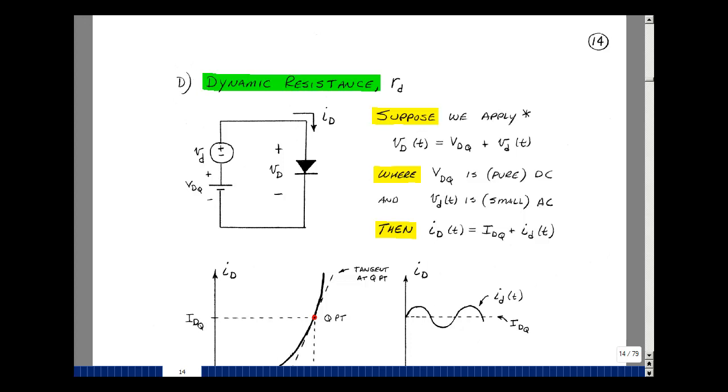This lesson deals with dynamic resistance and a voltage-controlled attenuator. You can find these notes in the ECE 302 e-book in Chapter 2, starting on page 14.